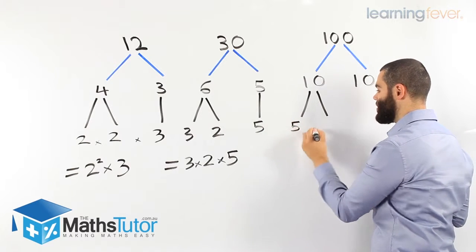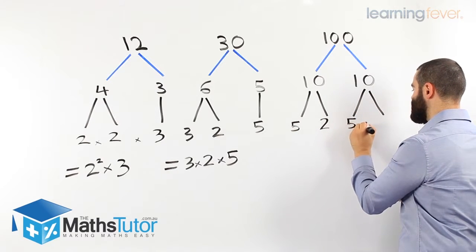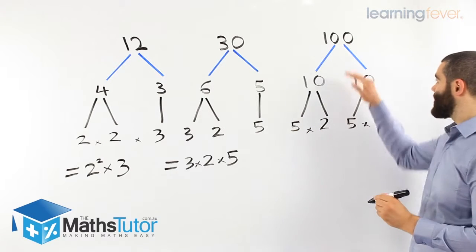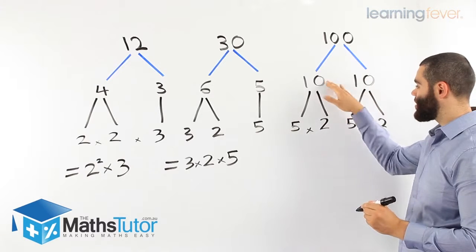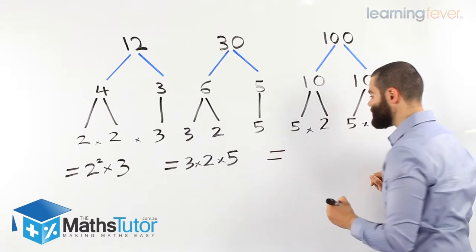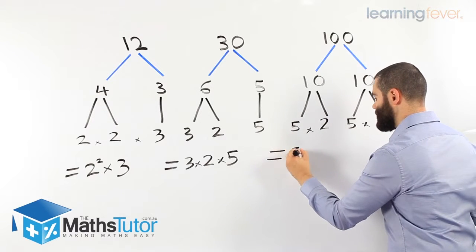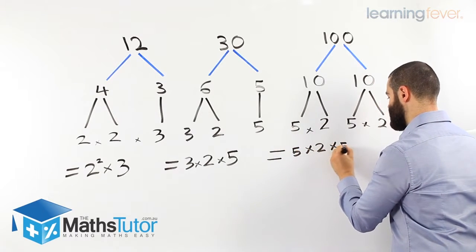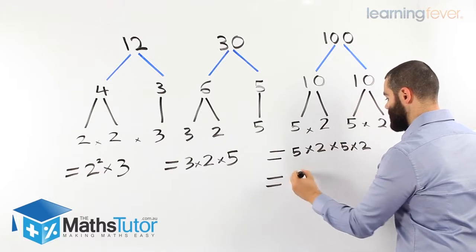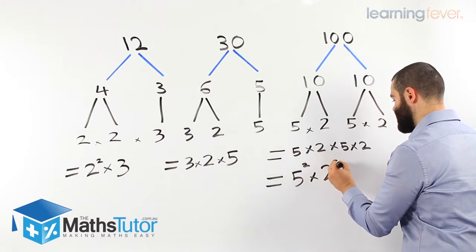Which is 5 and 2 and 10, same thing here, 5 times 2 is also 10. I've broken down the 100 into 10 times 10, I've broken down the 10, 5 times 2, 5 times 2. Now, I can easily see 5 times 2, 5 times 2, and to make it even simpler, 5 squared times 2 squared.